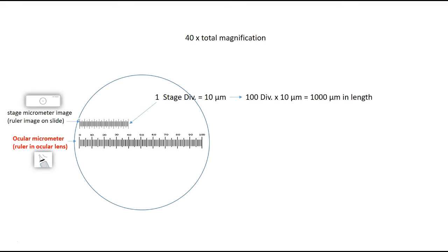If I switch out the slide micrometer and replace it with a specimen at 100x total magnification, I can see that my specimen is about 14 divisions long — it spans from division 12 to division 26, so 26 minus 12 equals 14 divisions. 14 divisions times 10 micrometers means that specimen is 140 micrometers in length.